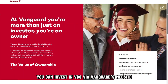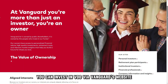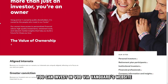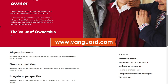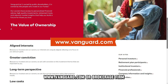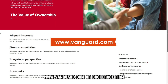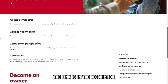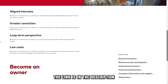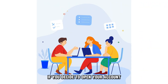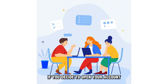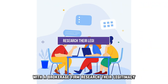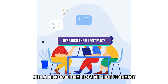You can invest in VOO via Vanguard's website, www.vanguard.com, or a brokerage firm. The link is in the description. If you decide to open your account with a brokerage firm, research their legitimacy.